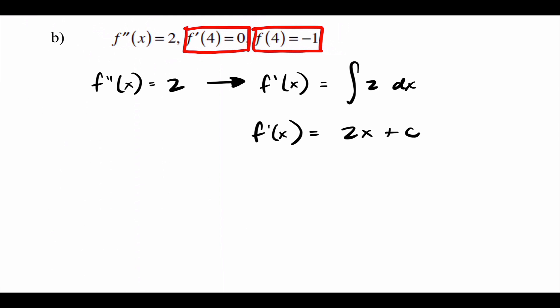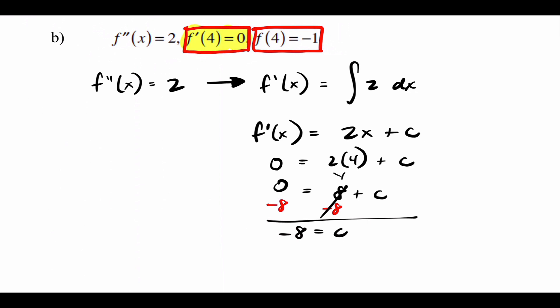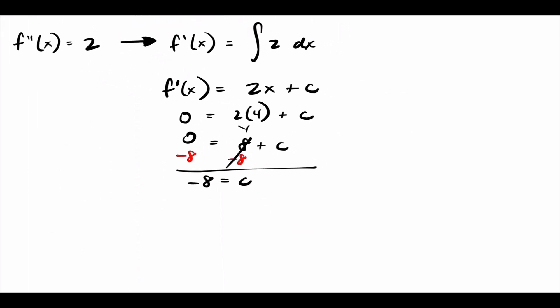Before moving to the original, I need to find what C is using the given condition for the first derivative: when I plug in x = 4, the derivative equals zero. So 2(4) plus C = 0, giving 8 plus C = 0, so C = negative 8. Therefore the first derivative is 2x minus 8.